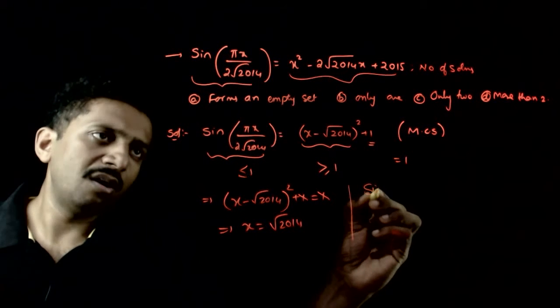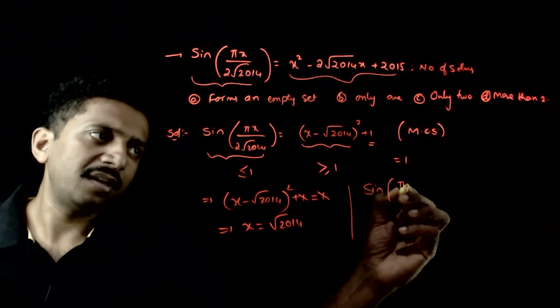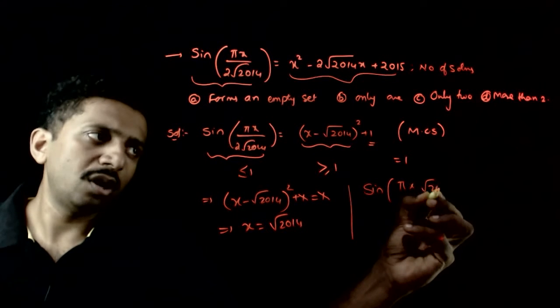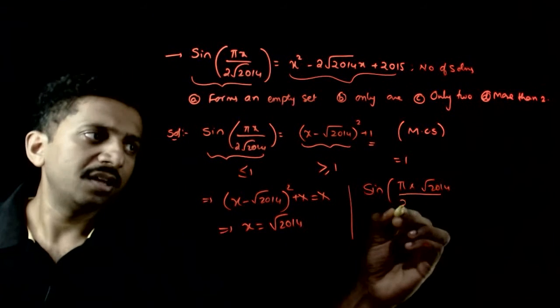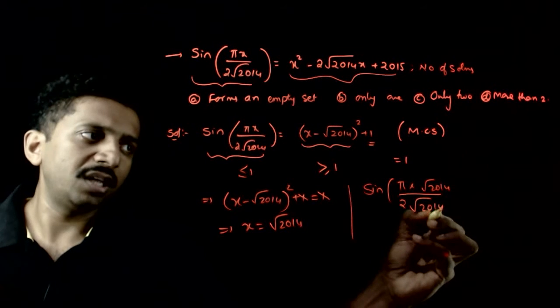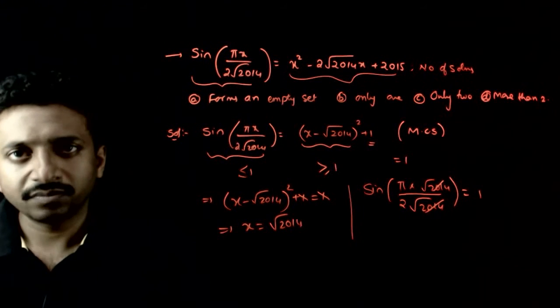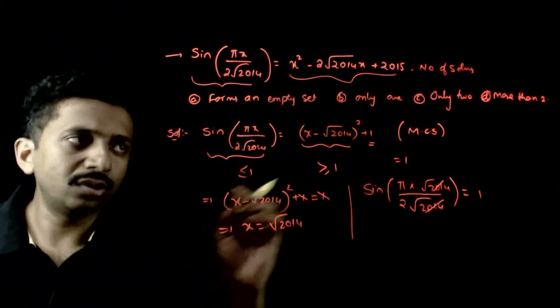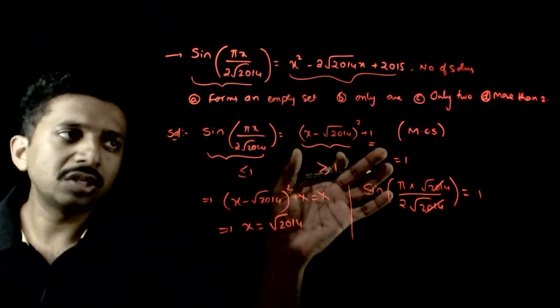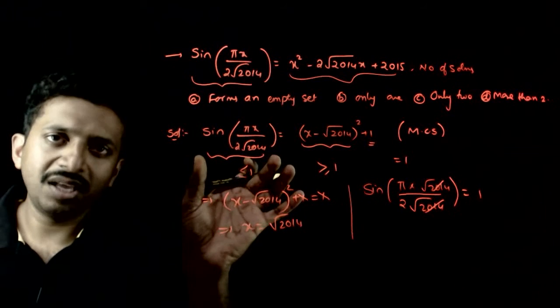So sin of (π·√2014)/(2√2014) is equal to sin(π/2) which is equal to 1. So at exactly √2014, this is also equal to 1. This is also equal to 1. Hence, these two are the same.